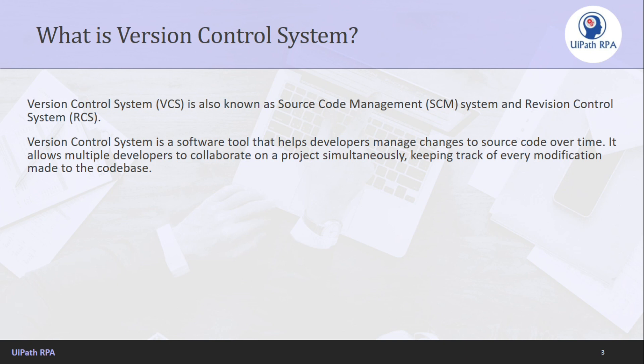In simple words, version control systems are a category of software tools that help in recording changes made to files — workflow files, XAML files — by keeping track of modifications done in the code, along with information like who made the changes and what changes were made. By tracking who made which changes and when, version control increases transparency and accountability within your team.